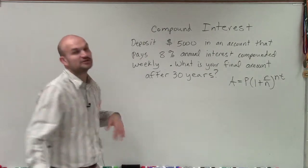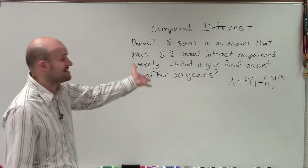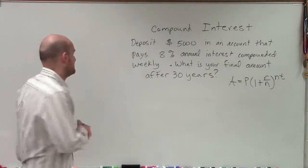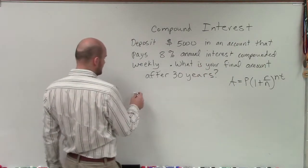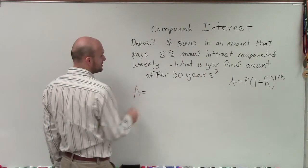And we're going to do this for 30 years. And what we want to do is determine the final value, because that's what it's asking. So we have our formula here, where we know that our final value is what we're trying to find, which is A. So we're going to leave that blank.